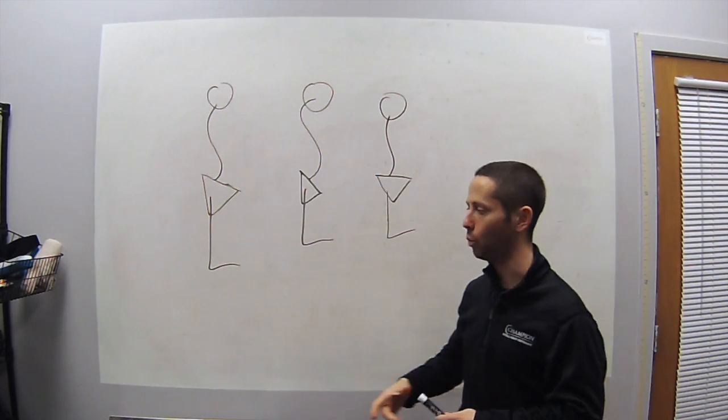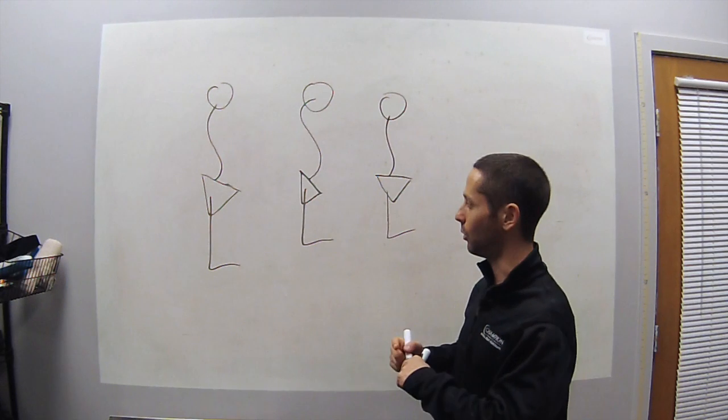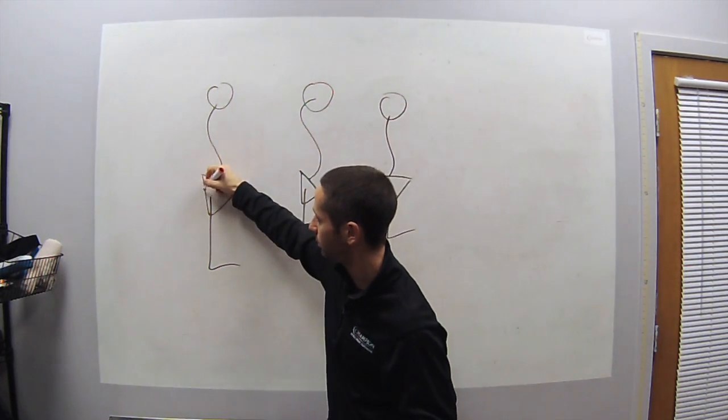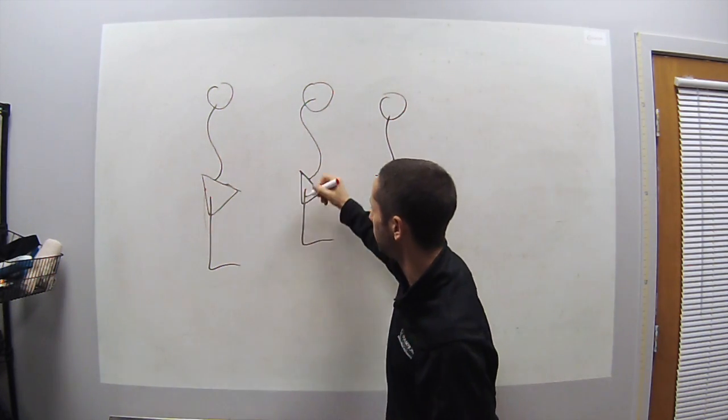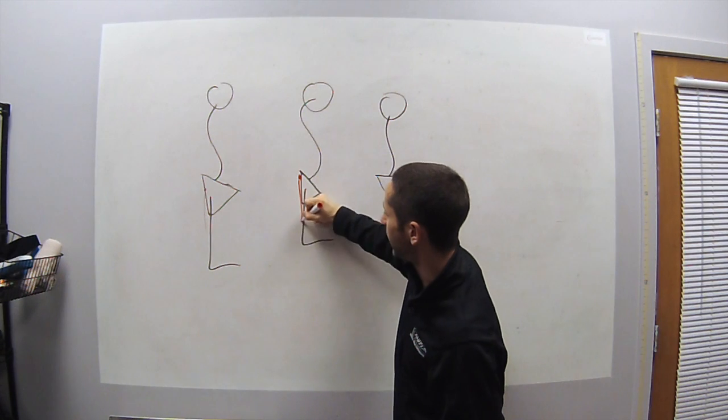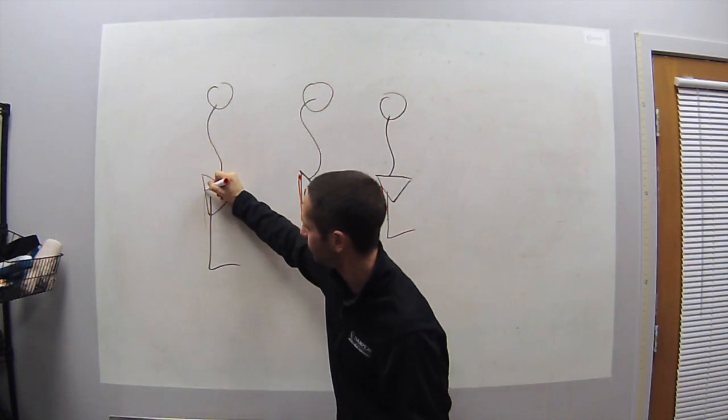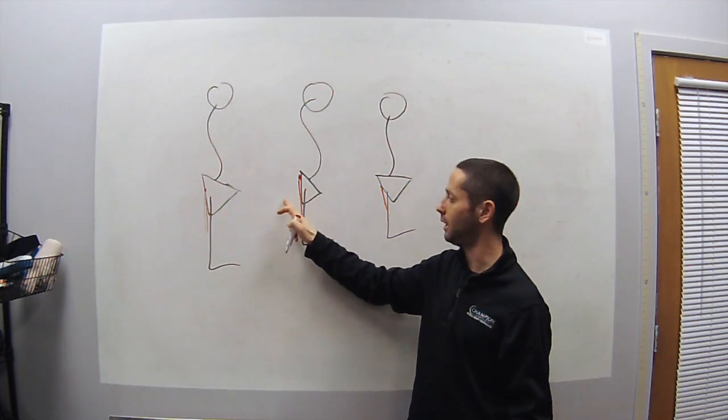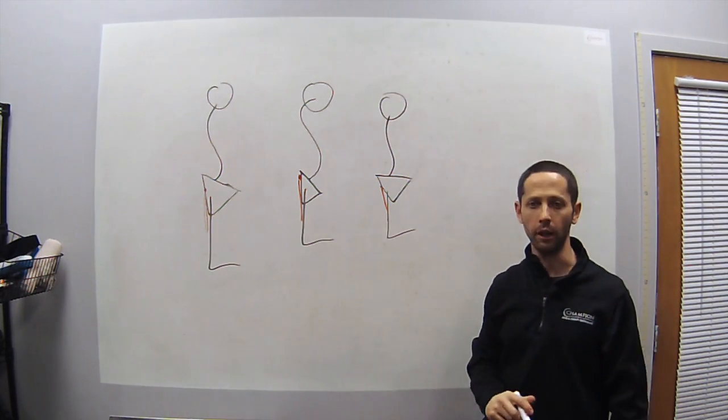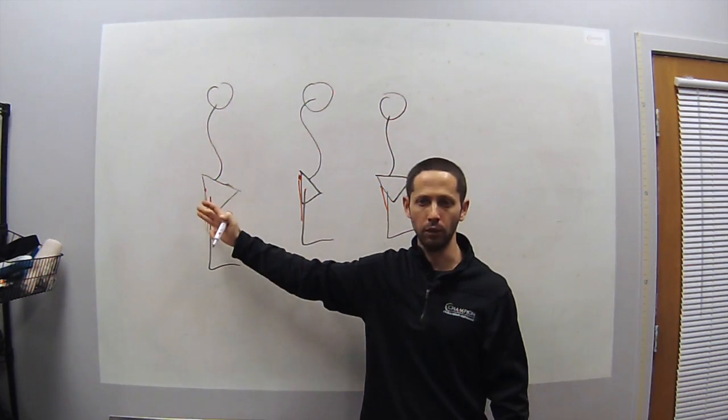But one thing we often talk about is what happens to the hamstrings. So let's just guess and pretend the hamstrings kind of attach here. You have this for a hamstring, you have this for a hamstring, and you have this for a hamstring. You can see a big difference in the size of these hamstrings. You can have a medium hamstring, a long hamstring, and a short hamstring just based on the position of the pelvis.